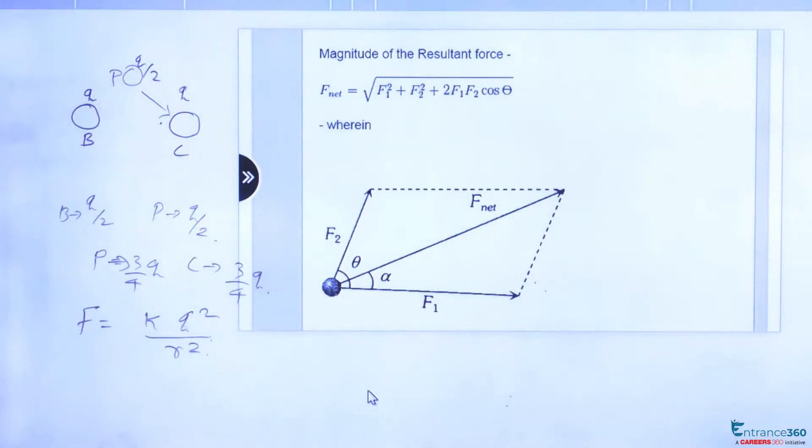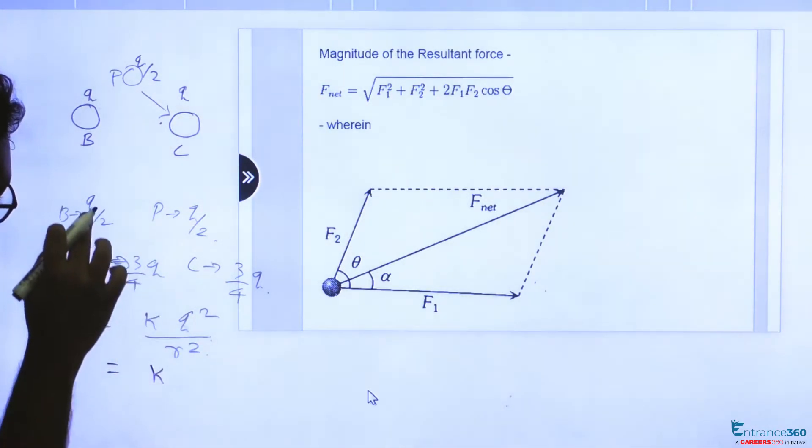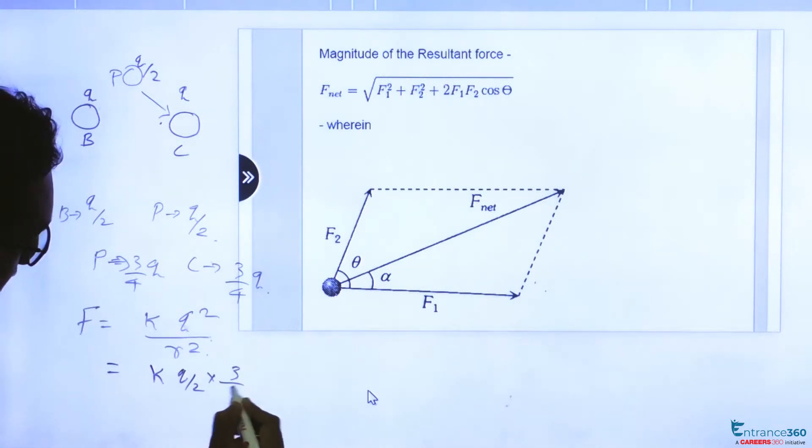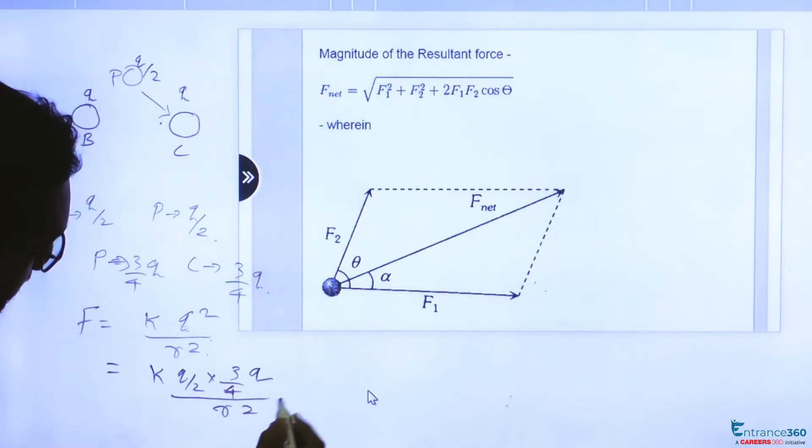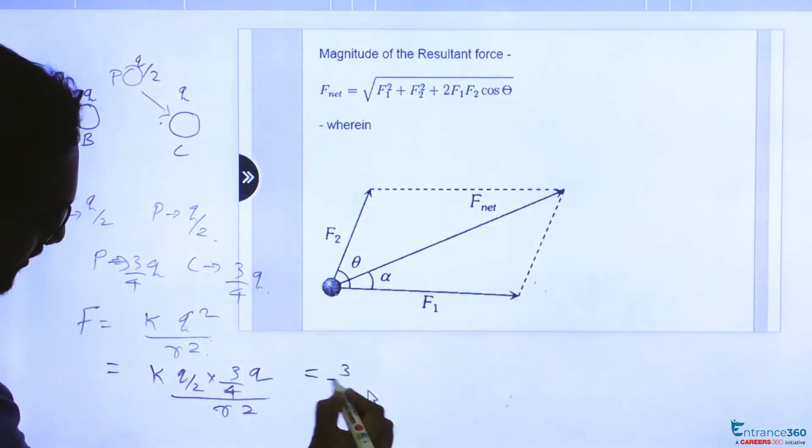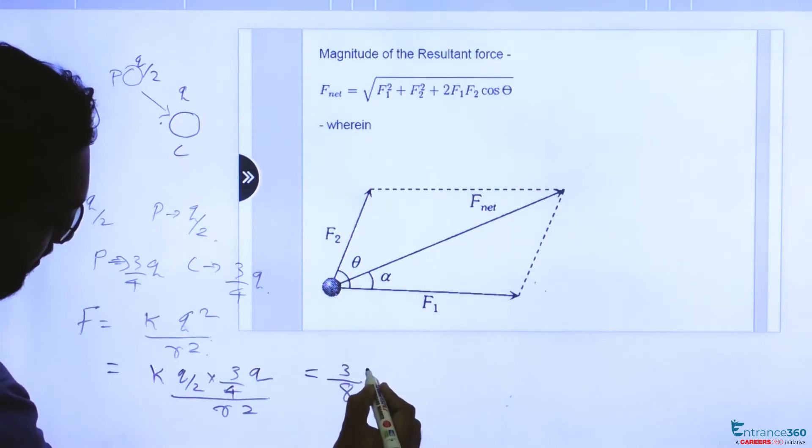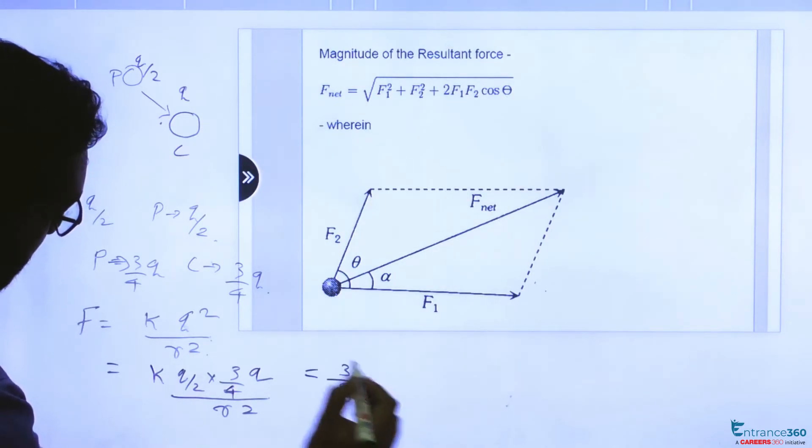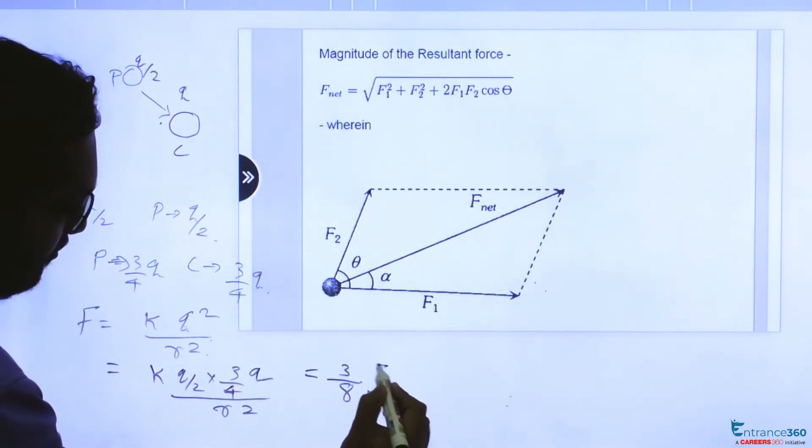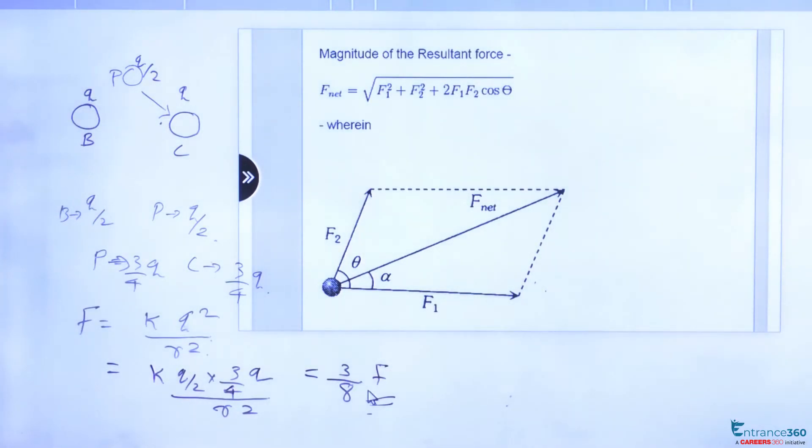And after contact, new force will be K into new charges, Q by 2 into 3 by 4Q divided by R square, which is equal to 3 by 8 KQ square by R square. KQ square by R square is F, so which is 3 by 8F. So our new force of repulsion is 3 by 8F.